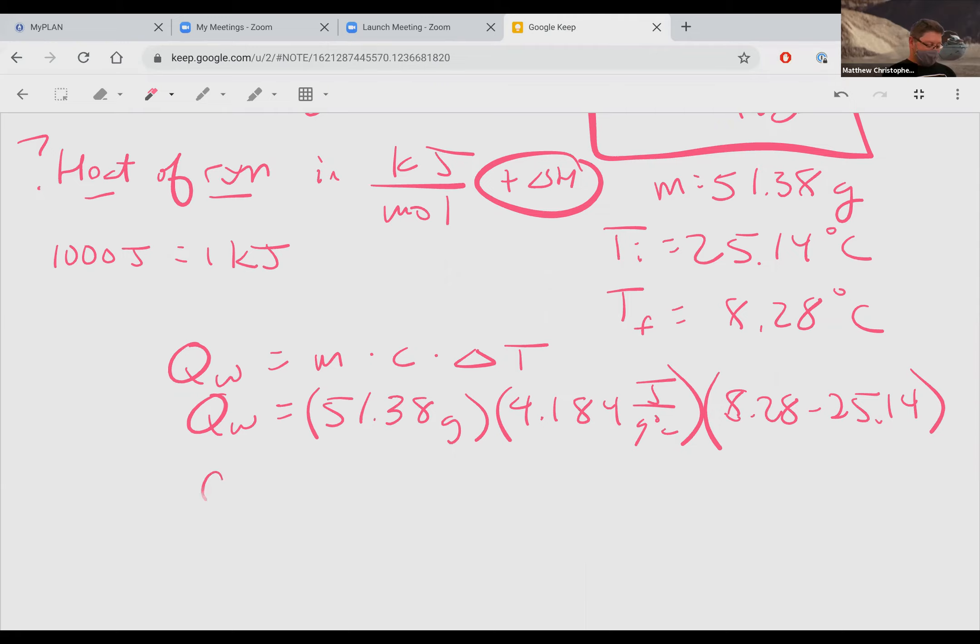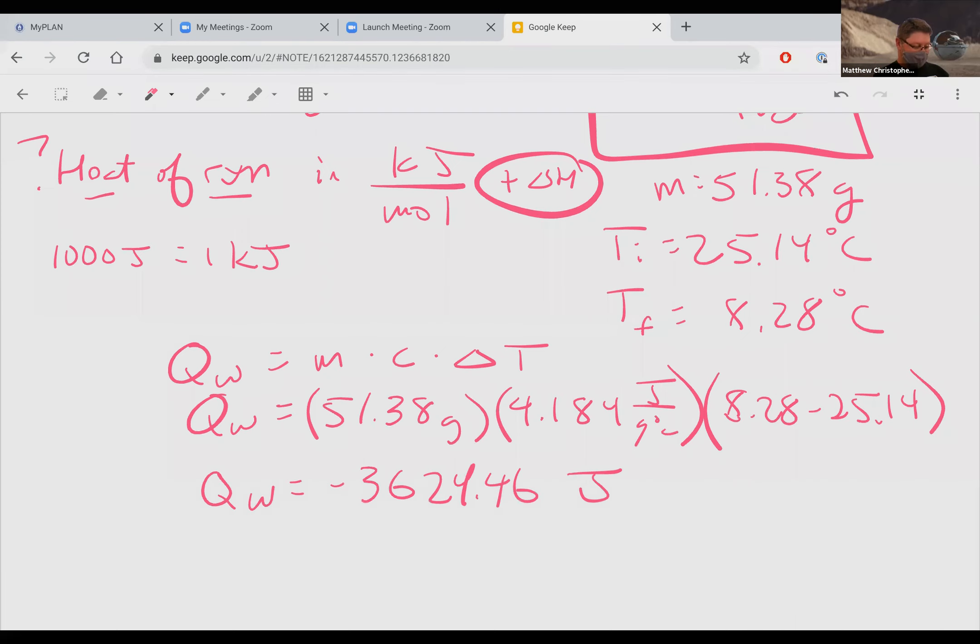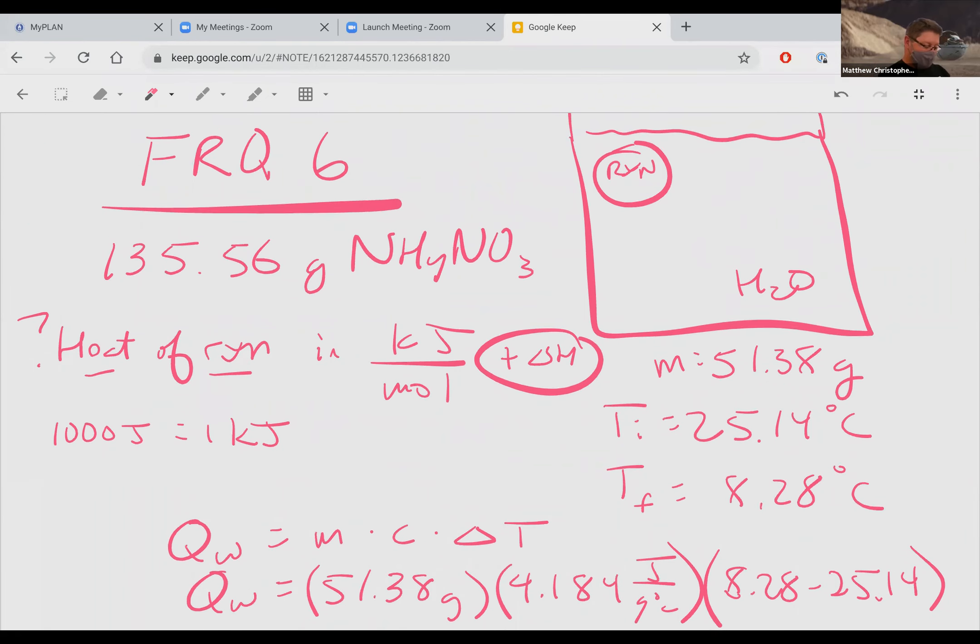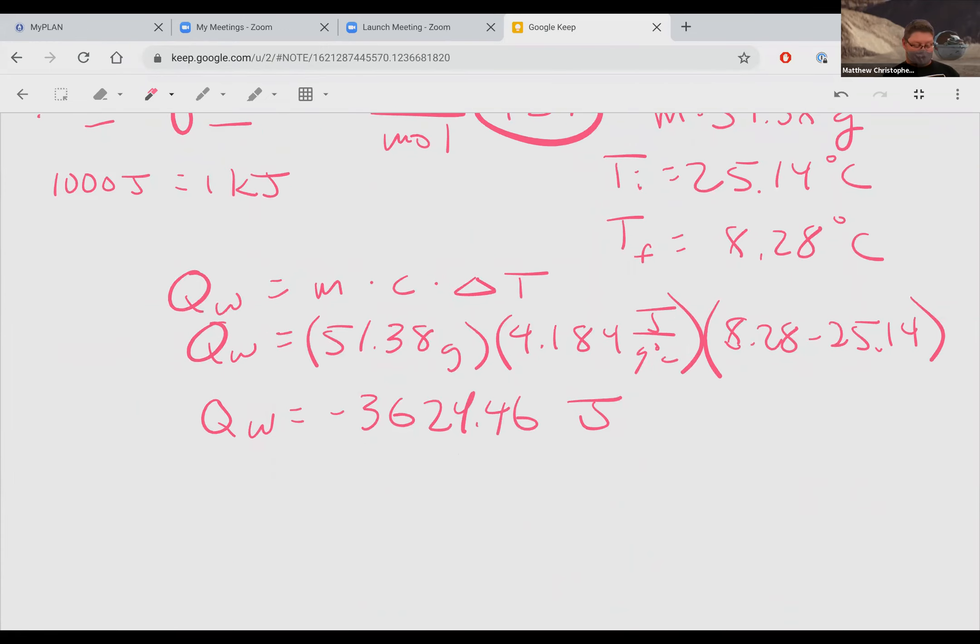Now when I calculate my Q_W, this gives me a value of negative 3,624.46 joules. You'll notice from the water point of view, it is negative, which makes sense because the water is going to be losing heat to the reaction. So I draw this arrow. So I know that the water is losing it. The reaction is gaining it. This is the amount of energy from the water's point of view.